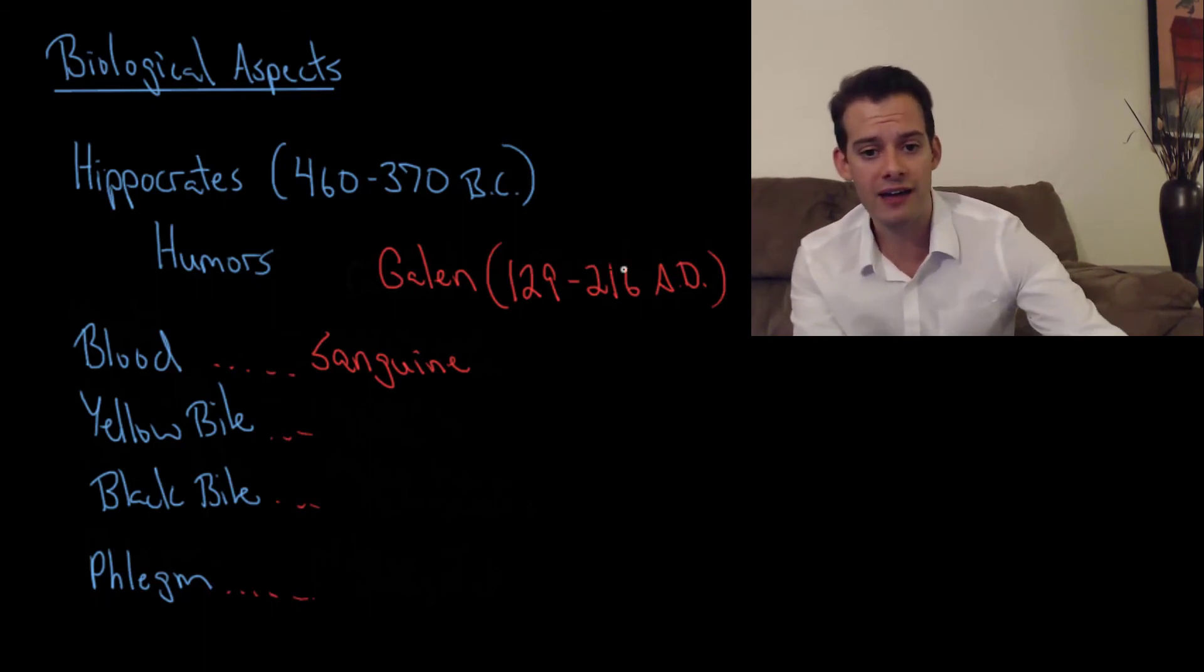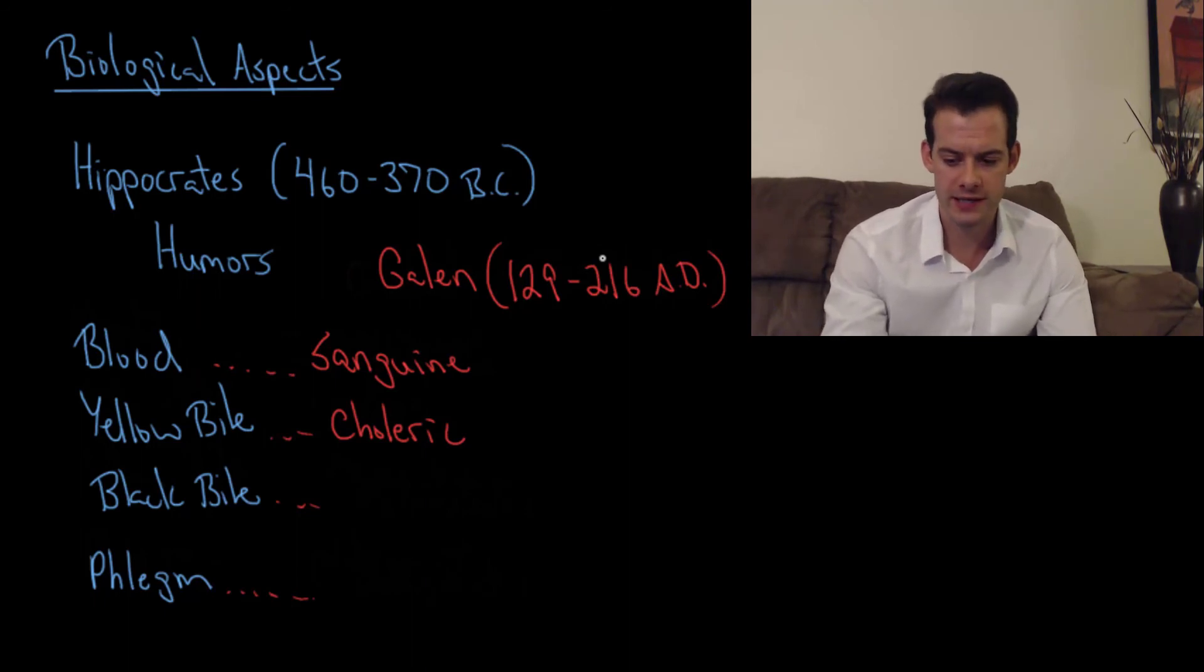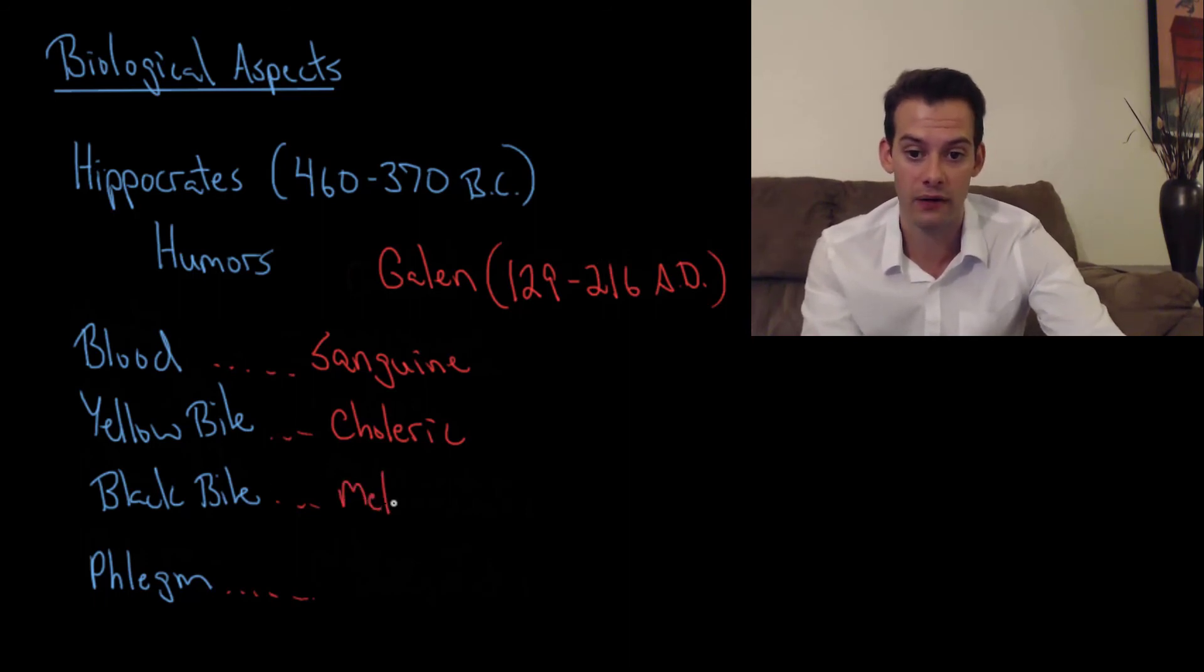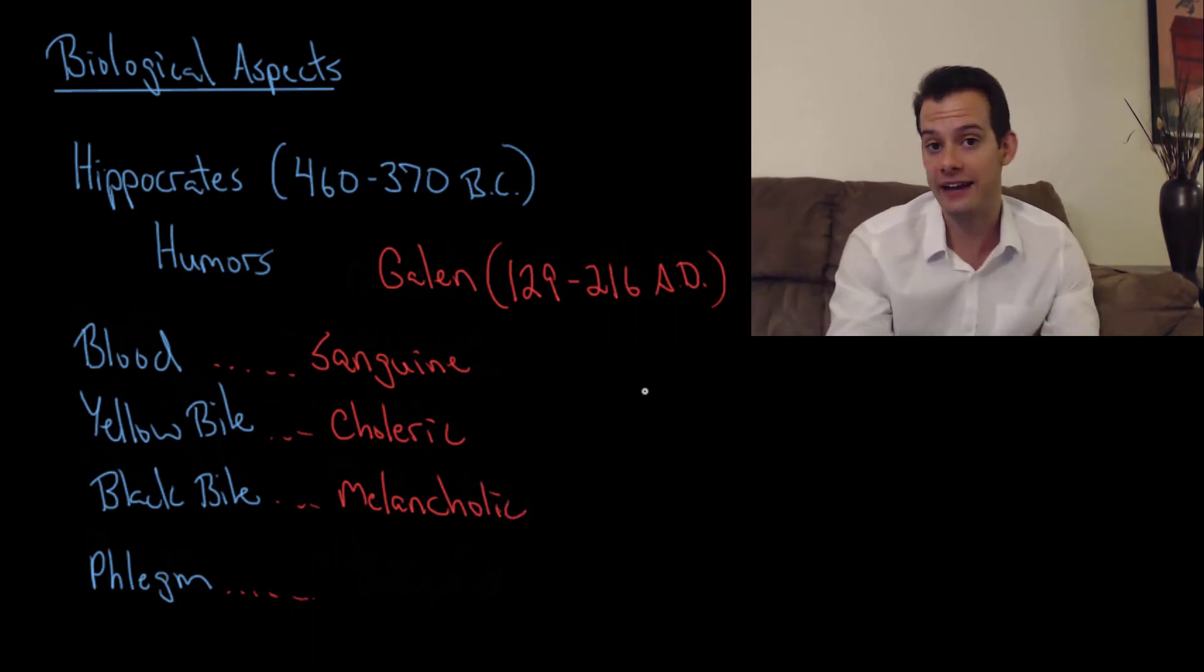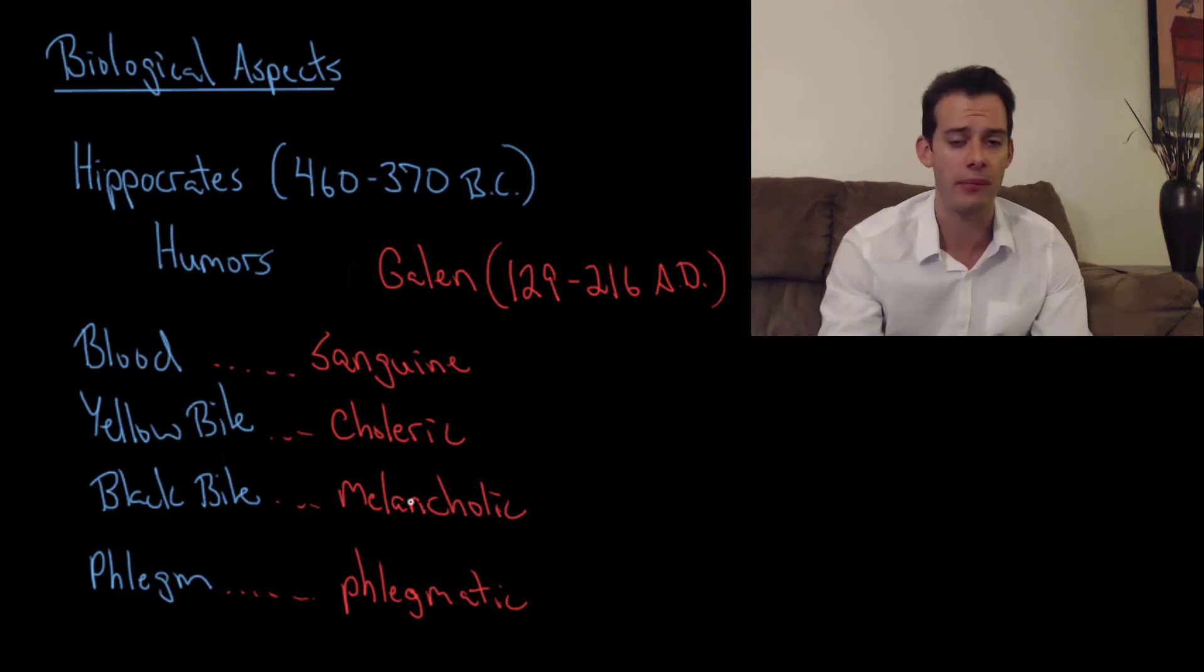If they have a high level of yellow bile you thought this makes somebody choleric. And this referred to somebody who is sort of irritable and bad tempered. If you have a high level of black bile on the other hand that makes you melancholic. And this refers to somebody who's sort of gloomy and sad and depressed. And lastly if you had a high level of phlegm then that would make you phlegmatic. And this refers to somebody who is very even tempered, very calm and cool.